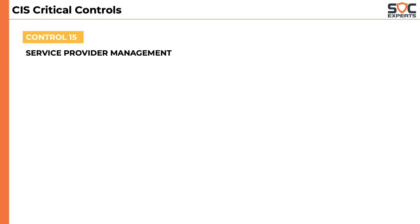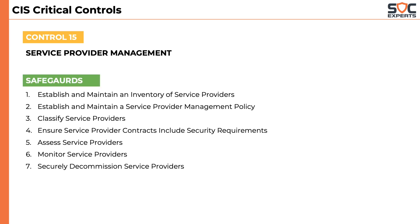The fifteenth control is service provider management. In the current world, outsourcing part of a company's operations or services is common. When a company decides to outsource any of its services, it has to do a thorough third-party risk assessment. This control has seven safeguards and talks about maintaining a list of service providers, ensuring they have just enough access on enterprise assets, monitoring the activities of service providers, and securely removing a service provider after the contract ends.